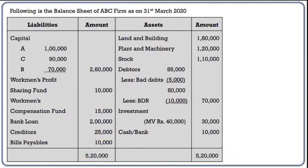When reading the balance sheet, we have to identify the liability components to include in total liabilities. Capital — no. Workman's Profit Sharing Fund — yes. Workman's Compensation Fund — no. Bank Loan — yes. Creditors — yes. Bills Payable — yes.